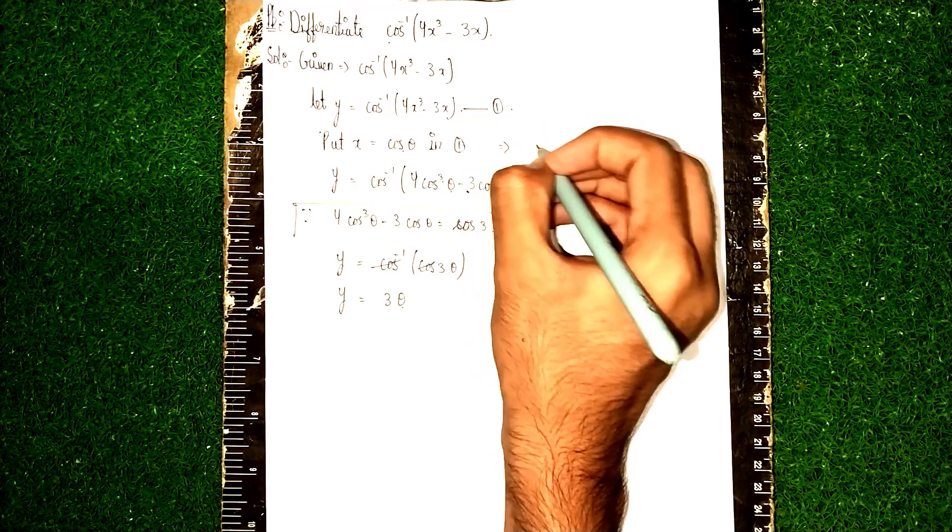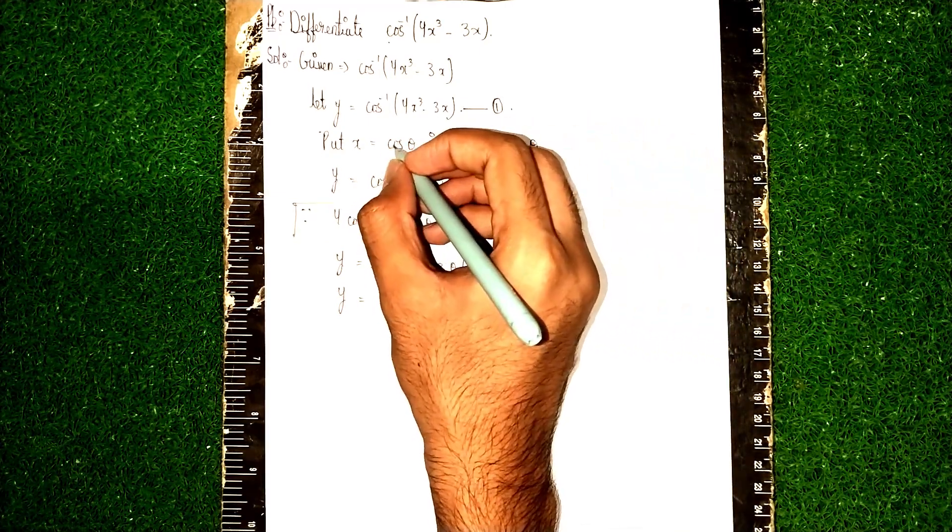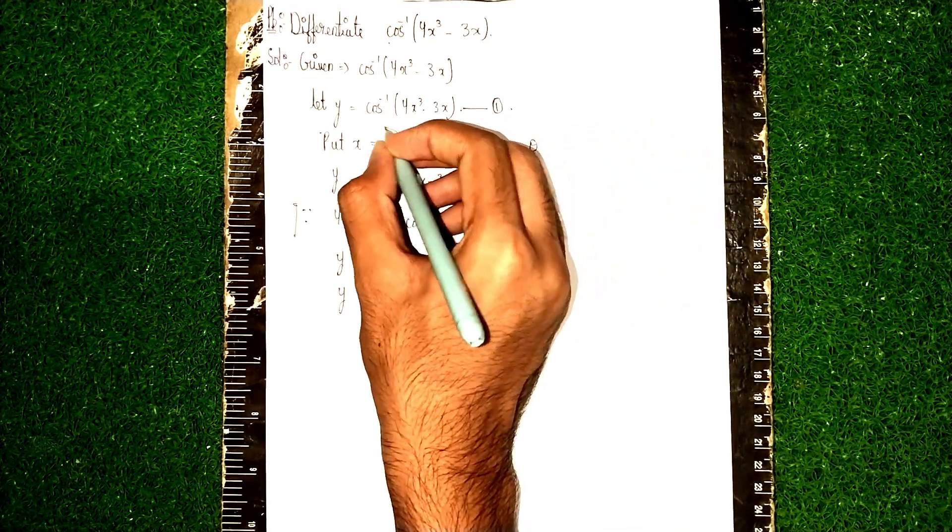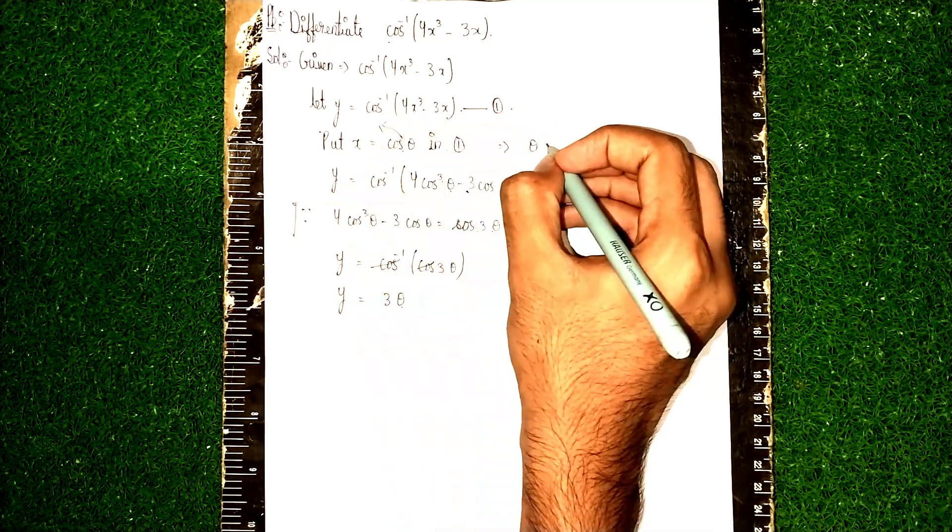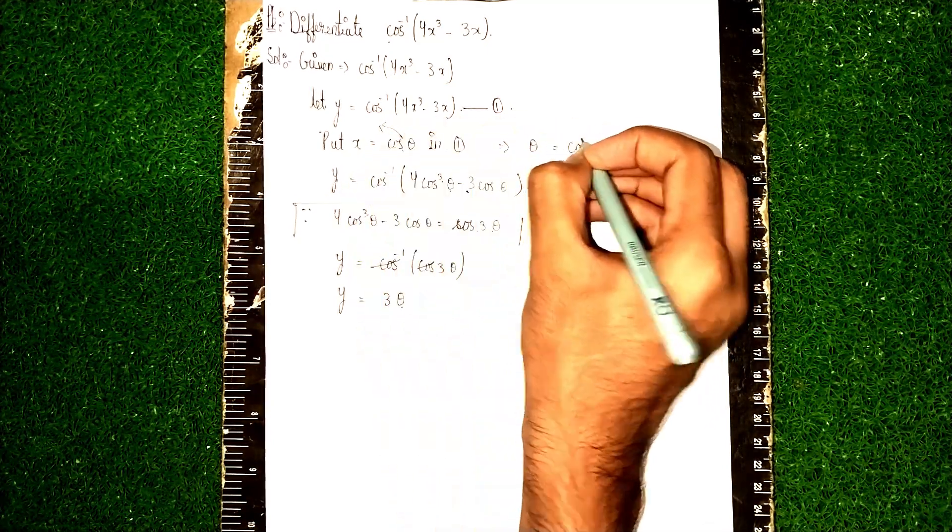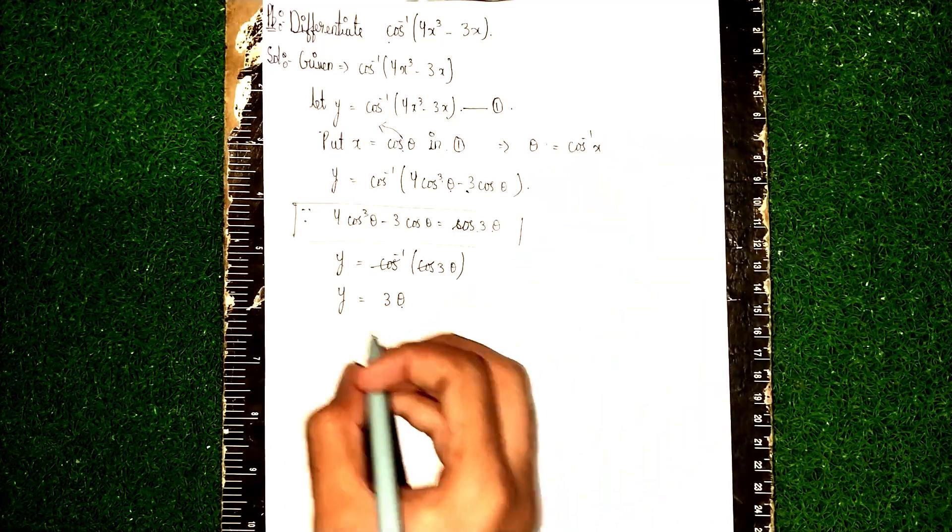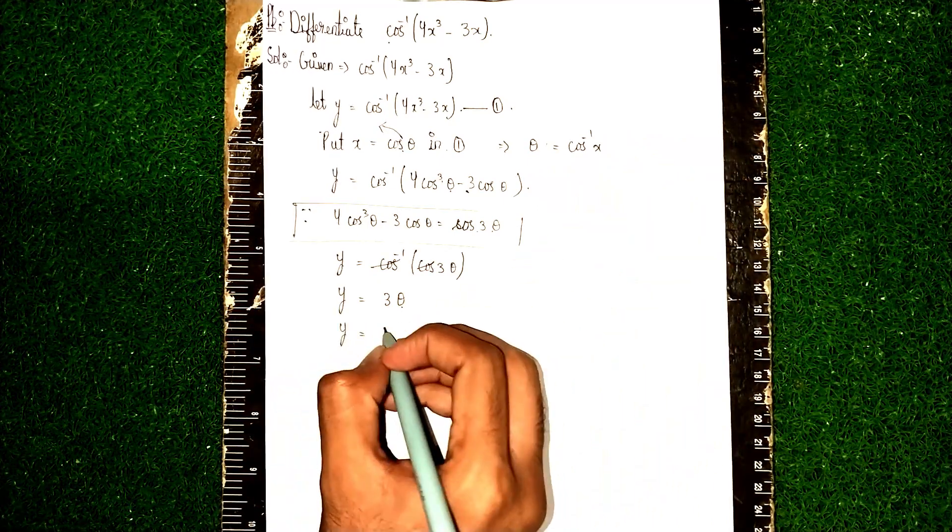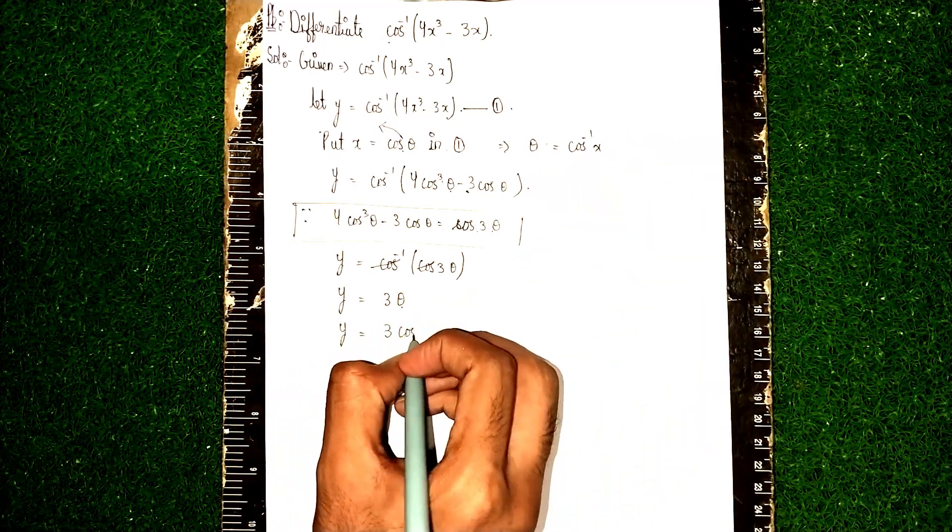I need the θ value. So what am I doing? θ equal to cos inverse of x. Now it becomes y equal to 3 cos inverse x.